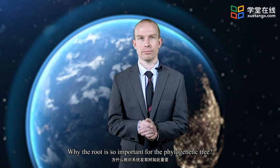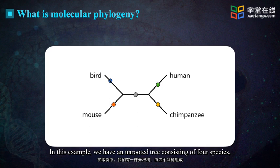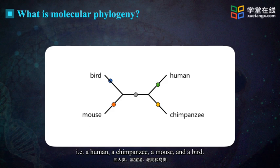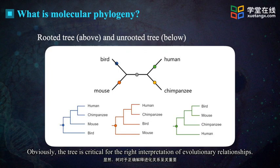Why is the root so important for the phylogenetic tree? In this example, we have an unrooted tree consisting of four species: a human, a chimpanzee, a mouse, and a bird. If you place the root on different positions on the branch, you will get quite different phylogenetic trees. Obviously, the root is critical for the right interpretation of evolutionary relationships.